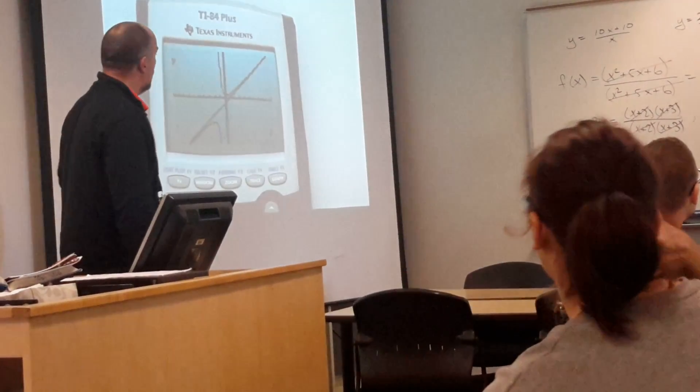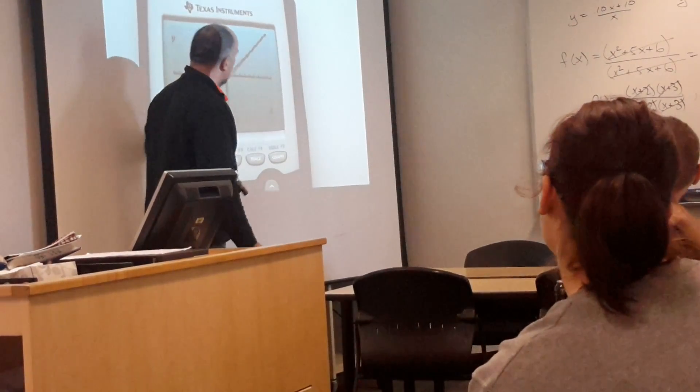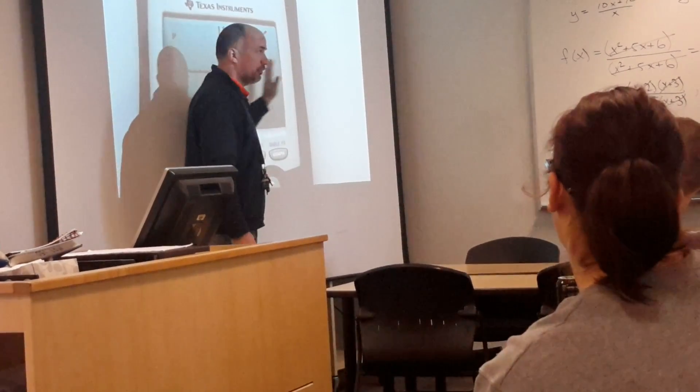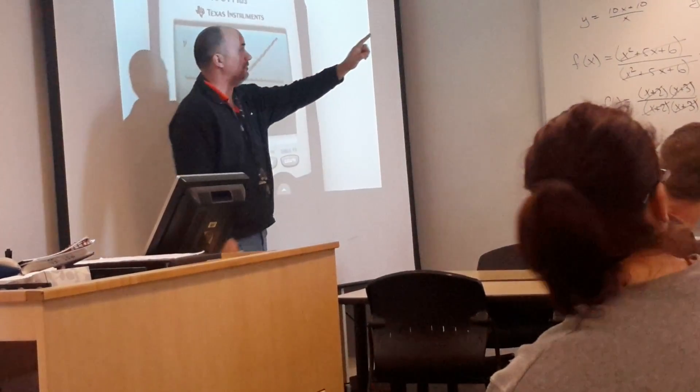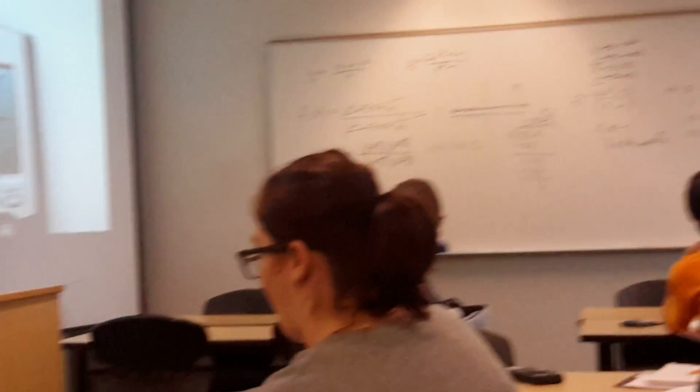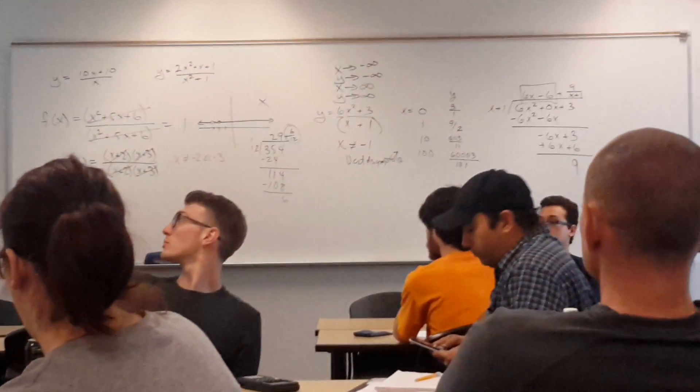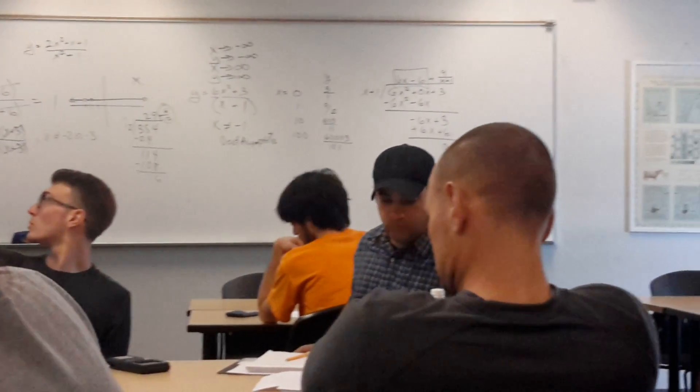And so the end behavior of this function looks like 6x minus 6. So as x approaches infinity, that function, the 6x squared plus 3 over x plus 1, approaches 6x minus 6. And you can see it in the table. If you go out to the table here and just look at the two values.